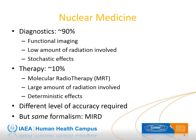Nuclear medicine is mostly a diagnostic specialty and therefore the amount of radiation involved is low and only stochastic effects can be put in evidence, whereas for therapy, large amounts of activity are injected and therefore deterministic effects can occur. Obviously, for diagnostic or therapy, different levels of accuracy are required in order to process and to derive the dosimetry. However, both for therapy and diagnostic, we are going to use the same formalism — the MIRD formalism.